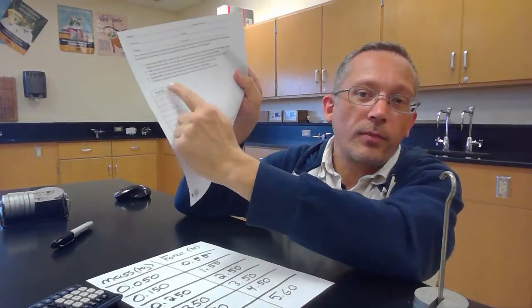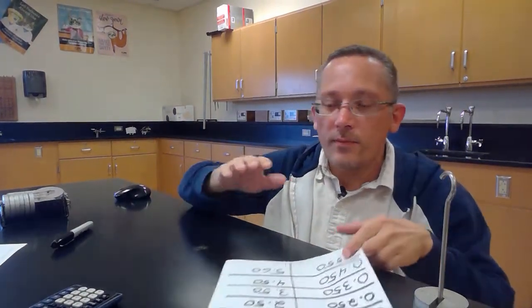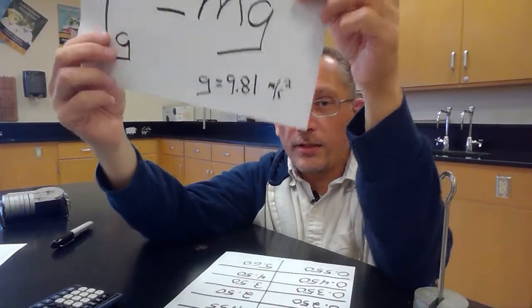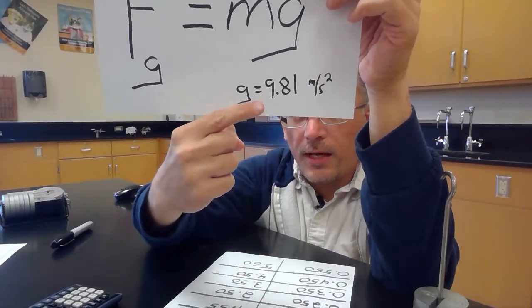Alright, so now what I'm going to do is I'm going to go ahead and make a graph with this data. And we're going to find the slope of the graph. And hopefully, like we said, the slope of the line is somewhere pretty close to 9.81. Now am I going to get exactly 9.81? Probably not. If I get somewhere close to 10, you know, 9.81 is about 10, if I get somewhere close to 10 then I've done pretty well. So let's make the graph and we'll see what our slope comes out to.